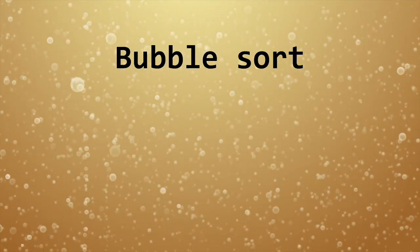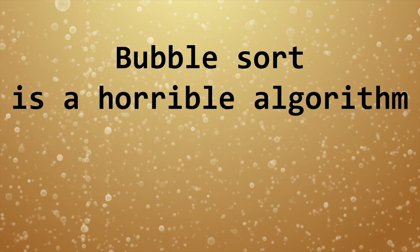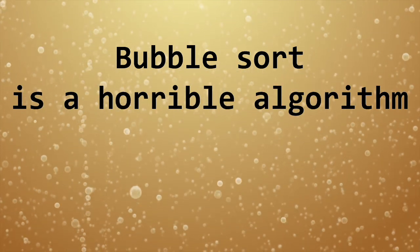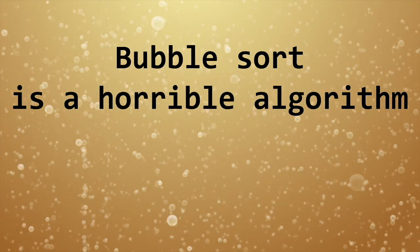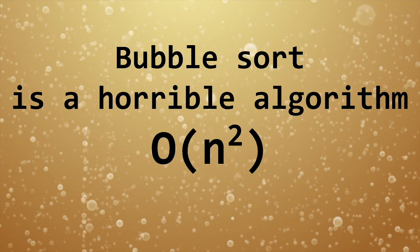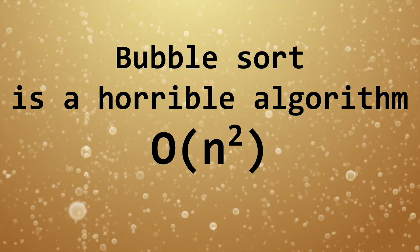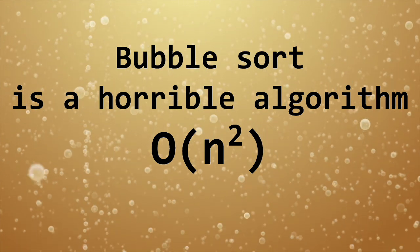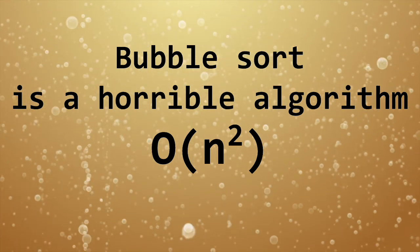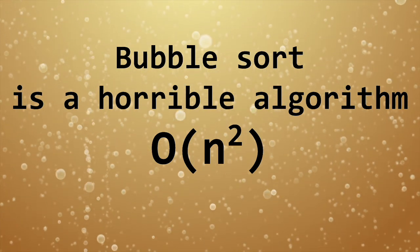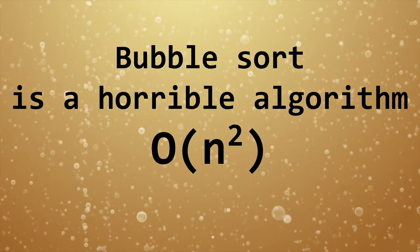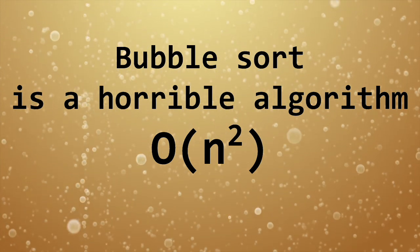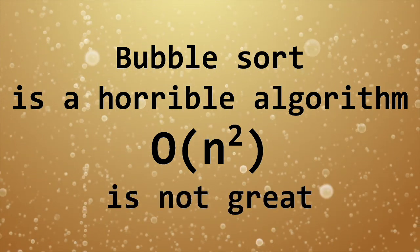If you know one thing about bubble sort, it's that it's a horrible sorting algorithm. It famously has a big O n-squared time complexity — that is, if you want to sort n things, you need to make on the order of n-squared comparisons, and that's not great.